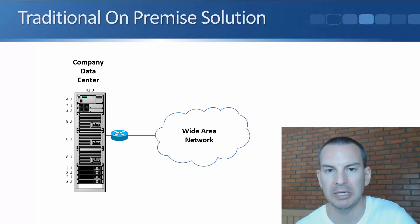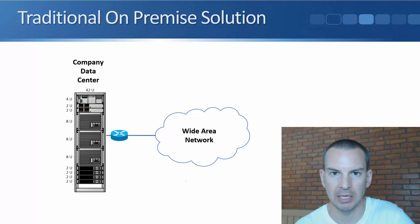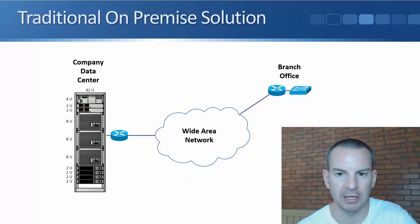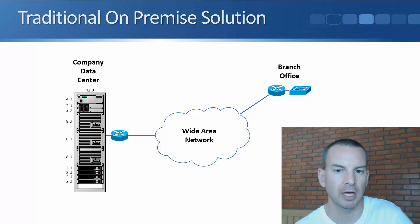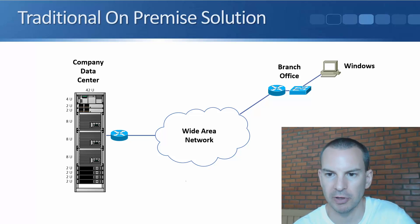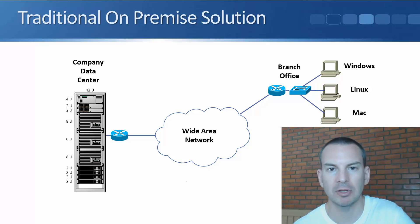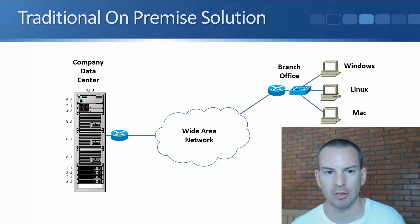The company data center is connected out through a network service provider, and there's a branch office connected via a VPN over the internet or a direct leased line. In the branch office, users may be on Windows PCs, Linux, or Mac — it doesn't matter. Whichever desktop they're using, they can all access the servers in the company data center.